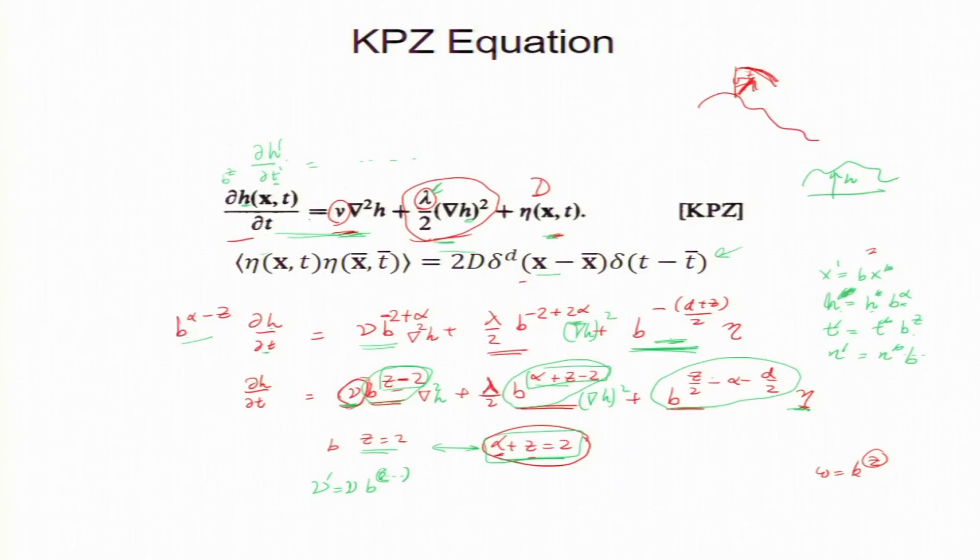And the eta is also should get renormalized. This forcing, okay. Forcing, you get different scale may look different, okay. And we will see. So, what we find by RG calculation which I am going to show you that eta and nu are renormalized but not lambda. Lambda is not renormalized, okay.